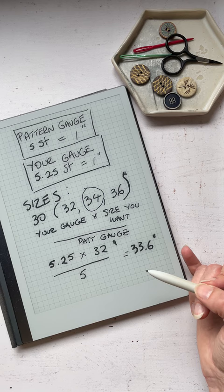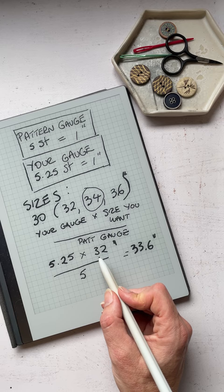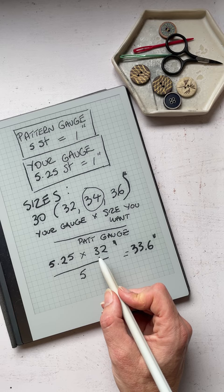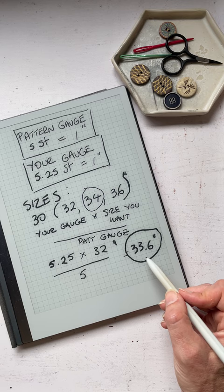Then to figure out what size you need to get close to your gauge, you multiply your gauge by the size you want divided by the pattern gauge, and what you're going to get over here is the size that you want to try and match.